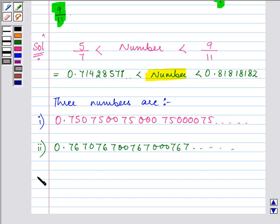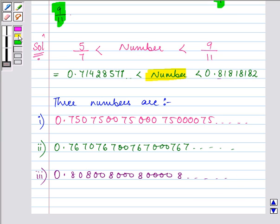And let us think of a third number which may be in 8 line and that can be 0.808008008, 3 times 0, 8, 4 times 0, 8 and which will again go on. So these are the three numbers which we have given to you.